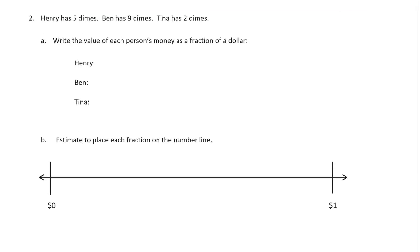Henry has 5 dimes, Ben has 9 dimes, Tina has 2 dimes. Write the value of each person's money as a fraction of a dollar. So a dime is 10 cents, if you don't know. And it takes 10, 20, 30, 40, 50, 60, 70, 80, 90, it takes 10 dimes to make a dollar, because a dollar is 100 cents. That means that each dime equals, since it takes 10 of them, each dime is 1 tenth of 1 dollar.